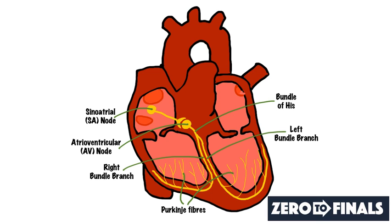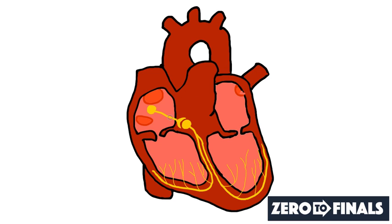The way I want you to think about ECG axis is by imagining yourself standing on top of the sinoatrial node, and you're looking down the general direction that electrical activity is flowing through the heart. This direction is the axis of the electrical activity of the heart.